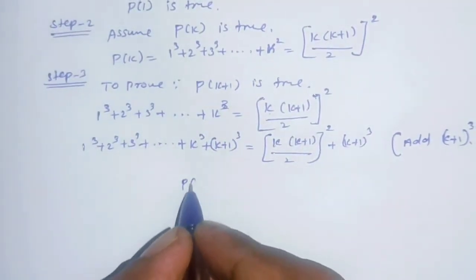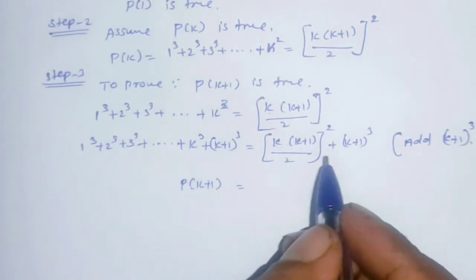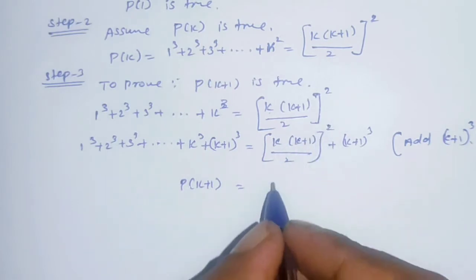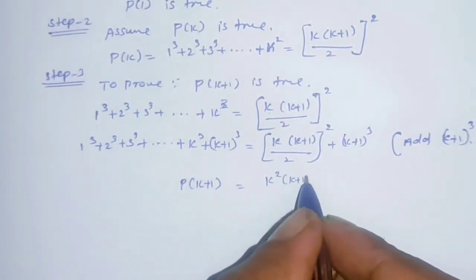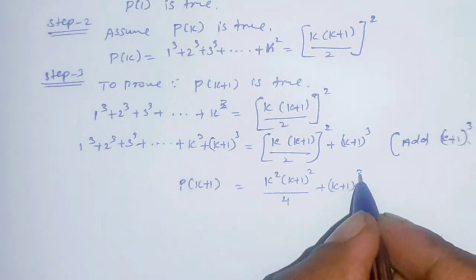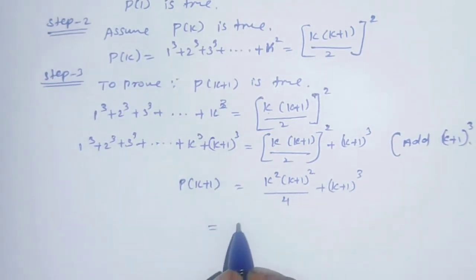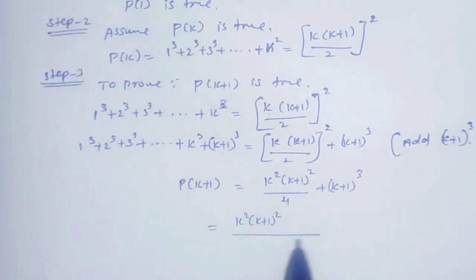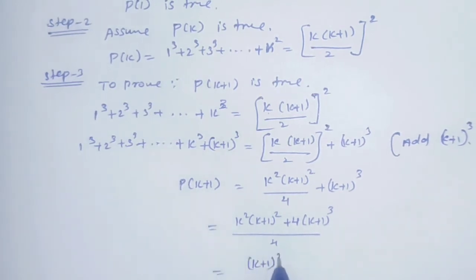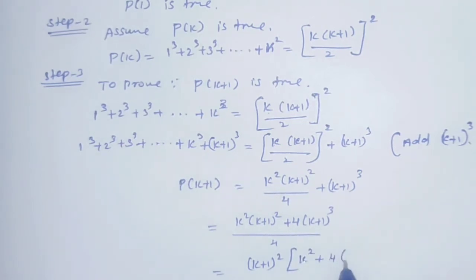This gives us P(k+1). We expand the right-hand side: k²(k+1)²/4 + (k+1)³. Taking (k+1)² as a common factor: (k+1)²[k²/4 + (k+1)] = (k+1)²[k² + 4(k+1)] / 4.